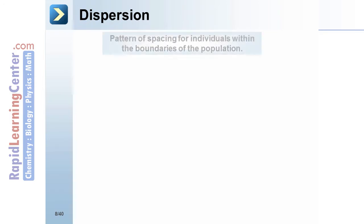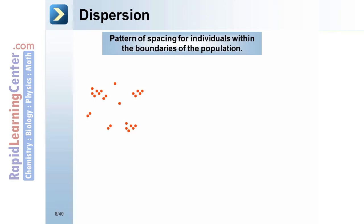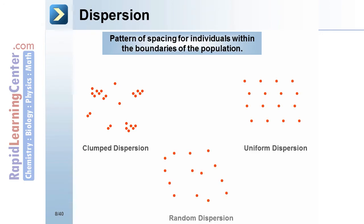The dispersion pattern describes the spacing of individuals within the boundaries of the population. There are three kinds: clumped dispersion, uniform dispersion, and random dispersion.